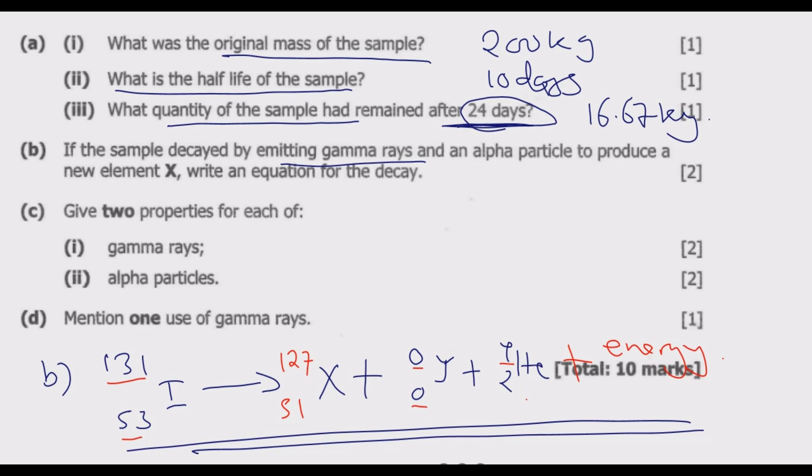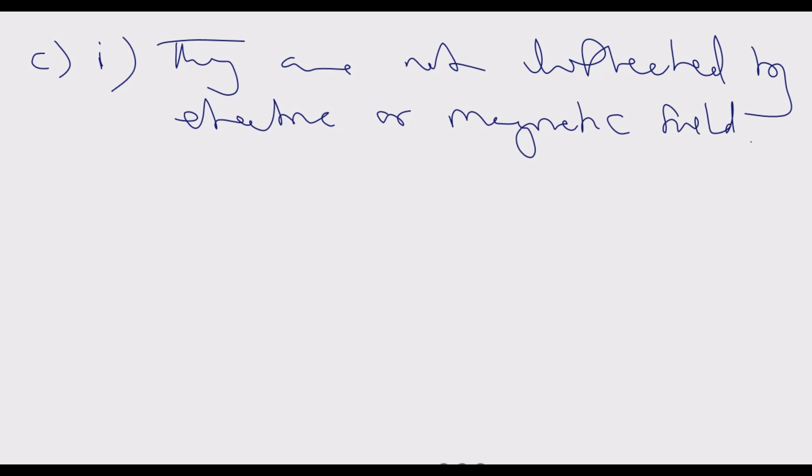Question C: Give two properties for each of Roman numeral 1 gamma rays, Roman numeral 2 alpha particles. C Roman numeral 1, properties of gamma rays: Number one, they are not deflected by electric or magnetic field. This is because they do not have a charge. Number two, they have small or very weak ionizing power.